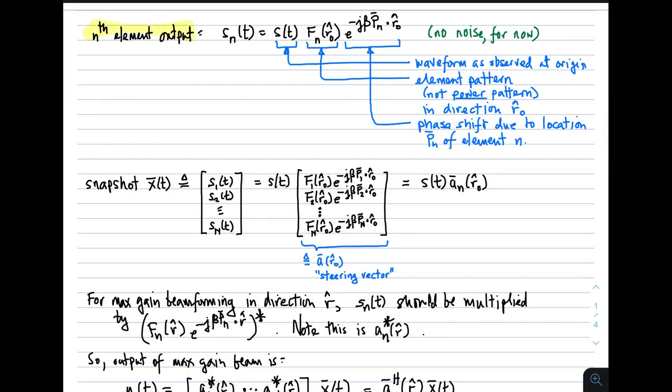The nth element output, the output of element n, we've already identified as S sub n. S sub n is clearly proportional to the waveform as observed at the origin, we'll call that S(t). We have to account for where the signal is actually received, which is the position of element n, P sub n. This factor accounts for the fact that we're not observing the signal at the origin but rather at the position of element n. We also have to account for the fact that the element pattern may not be isotropic. F sub n is the element pattern in voltage or current-like units, not in power units.